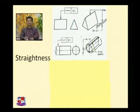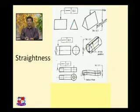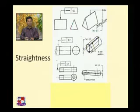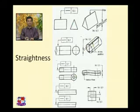It is shown in isometric view and orthographic view. Another example of straightness: the axis tolerance is 0.5, so this axis can deviate within 0.5 tolerance. Another example shows a rectangular hole with tolerances of 0.5 and 0.2 given respectively.